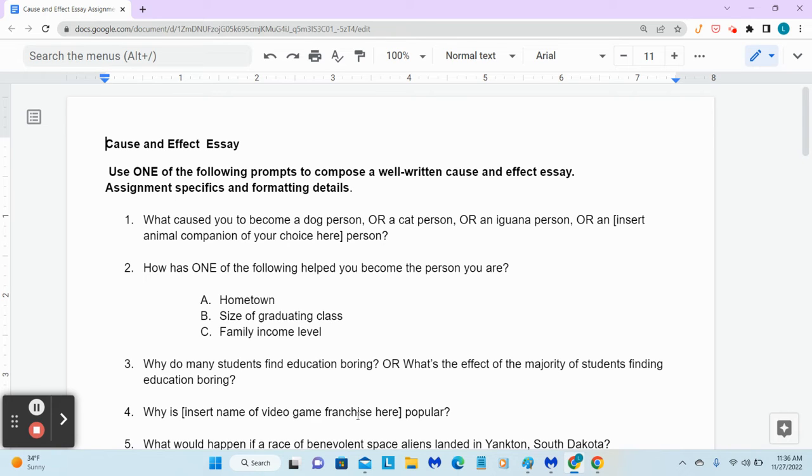Number two. How has one of the following helped you become the person you are? You have to start again with the effect, this is who I am. In a lot of ways, you are going to be defining yourself, this is who I am. Did your hometown help you do that? And it doesn't matter whether your hometown is New York City, or whether your hometown is Wakanda, South Dakota. Did the size of your graduating class help you do that? And again, I think that if you are in Wakanda, and your graduating class was 22, or if you are in New York City, and your graduating class was 6,000, or if you are in a major metropolitan area, and your graduating class was 100, because you went to a private school,